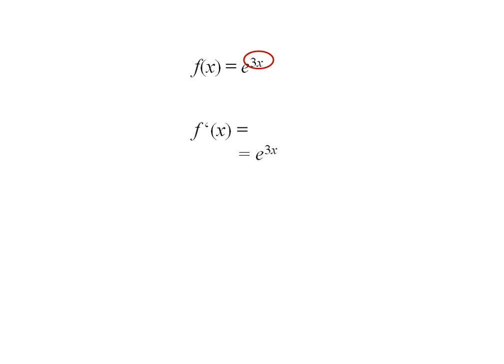Next, I look at that power and see it's raised to 3x. I take the derivative of 3x, which is 3. So I multiply my original function by 3. Now I rearrange this to its more standard form, which is 3e^(3x).